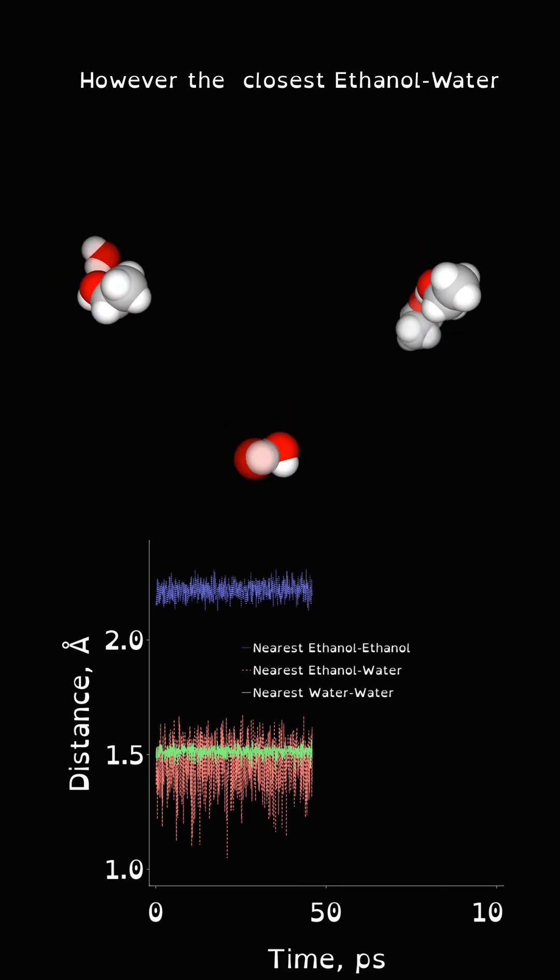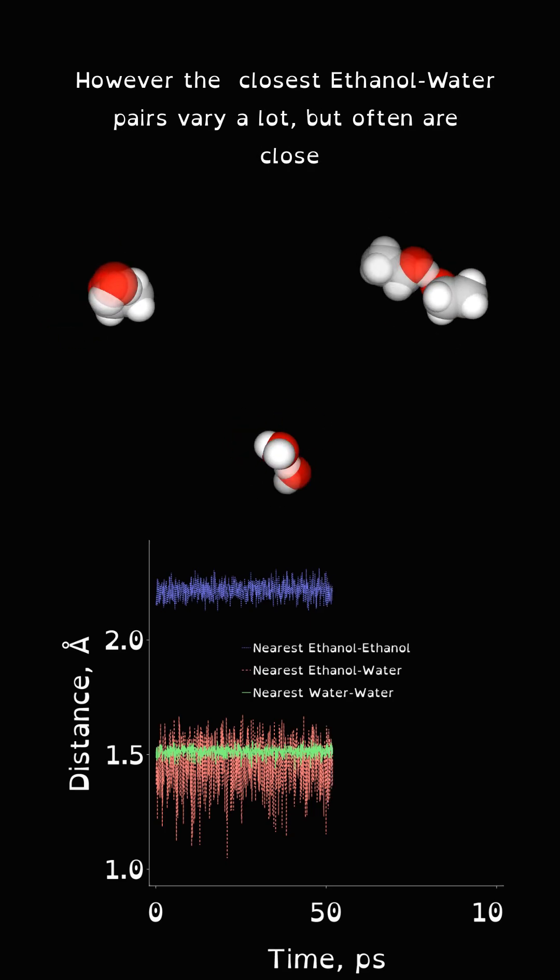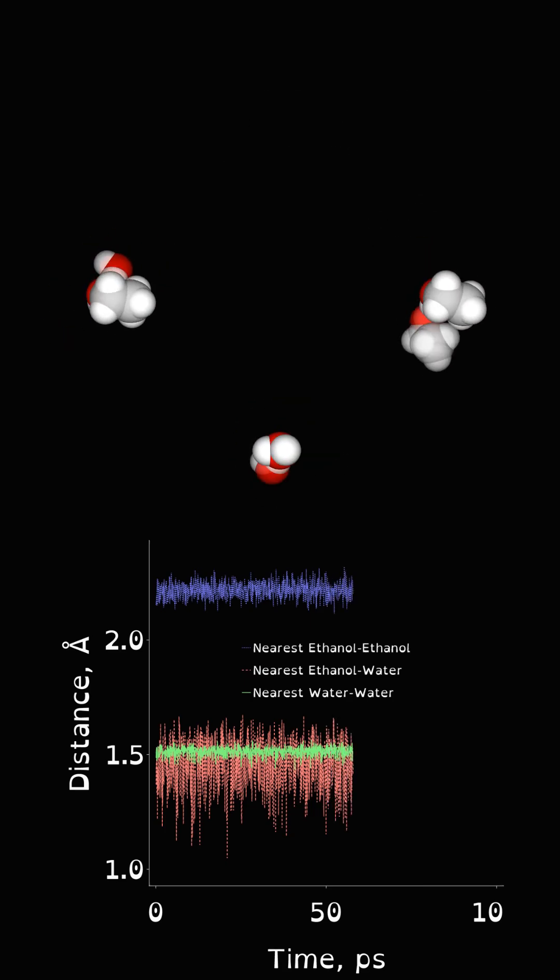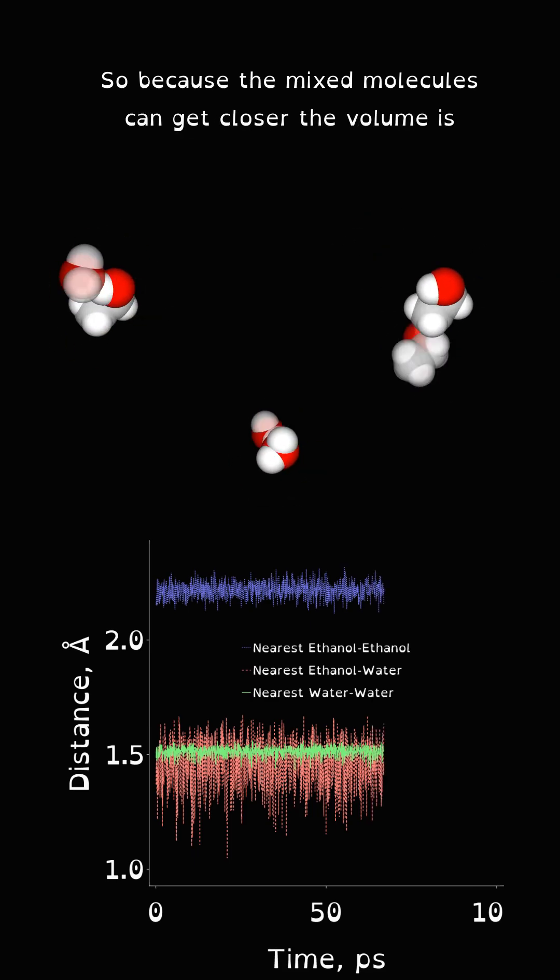However, the closest ethanol-water pairs vary a lot, but are often closer still. So because the mixed molecules can get closer, the volume is smaller.